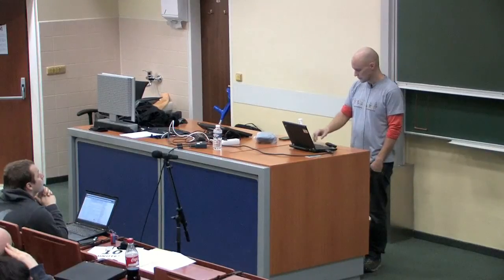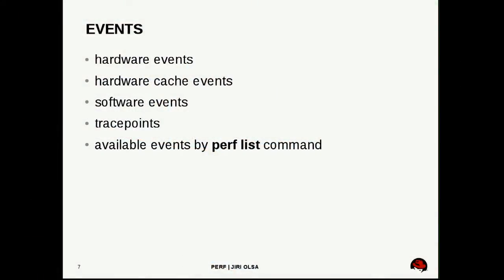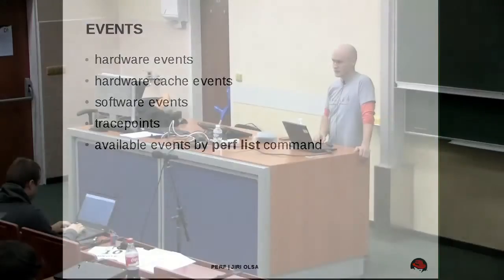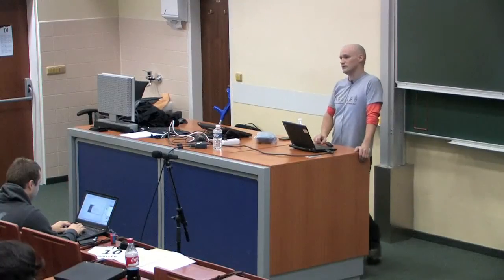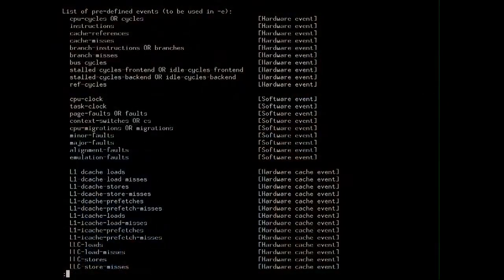Events are a very crucial term for perf profiling. Basically, everything that moves in the system, can be measured, and produces some number can be measured by perf — it's called an event. We have two basic types: hardware events and software events. We also have trace points, which are software events but are kind of special. You can get a list of all available events by running 'perf list', which shows tags indicating what type each event is.